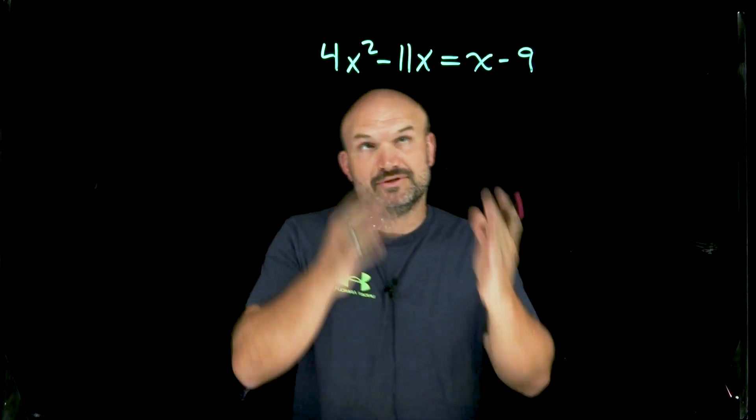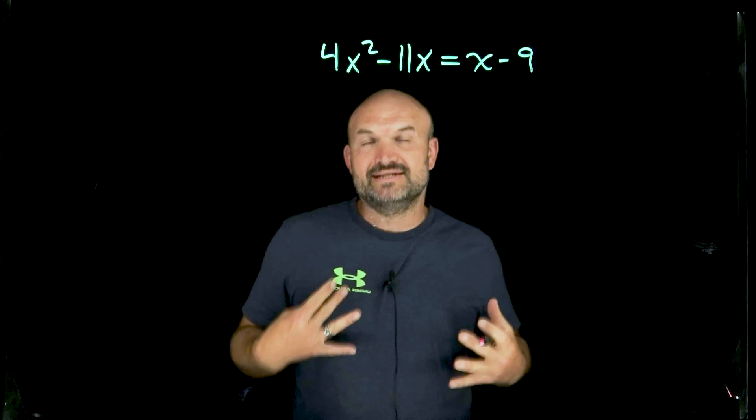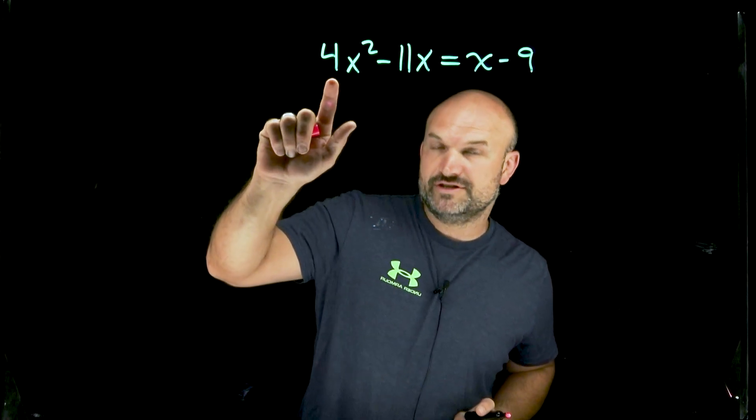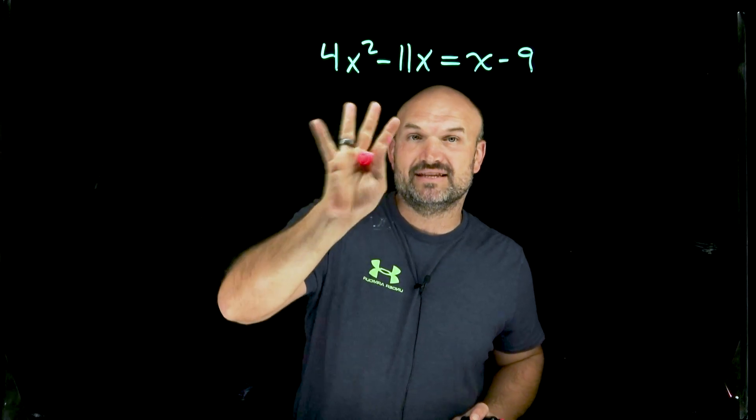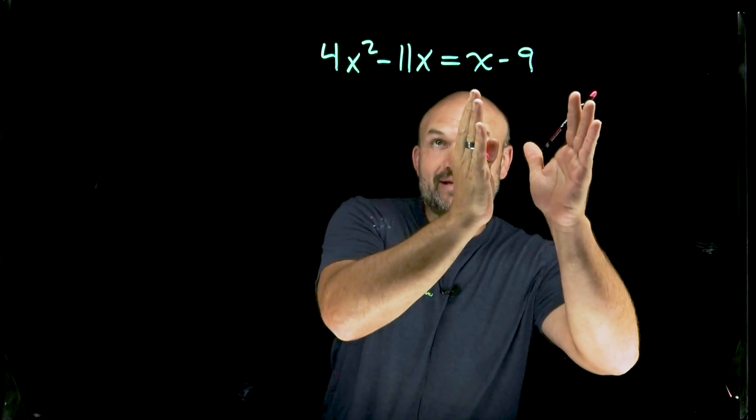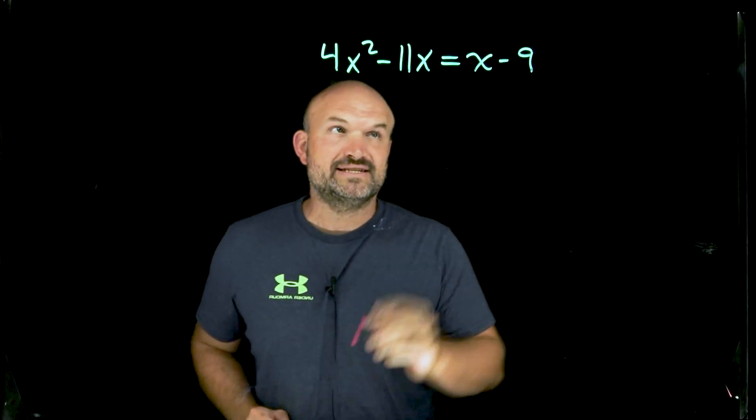It doesn't matter what side you're going to keep them, to the left-hand side or to the right-hand side. My personal opinion, I always like to get them to the side where the coefficient of my quadratic is always going to be positive. Since it's already positive on the left-hand side, I'm going to take the terms on the right-hand side and make sure that I can move them over to the left-hand side.